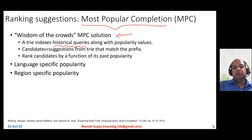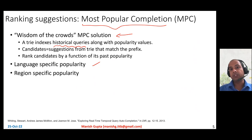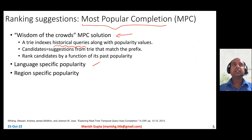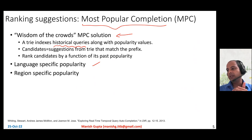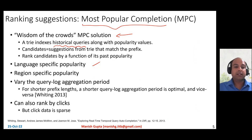While doing so, you have to be careful about being specific to language — particular suggestions may be popular for the same prefix in one language but not in another, so you probably build language-specific tries or incorporate language as an additional signal. You also have to be careful about region. For certain prefixes, some suggestions might be more popular in the US while less popular in India, and vice versa. So you have to be mindful of region-specific popularity.